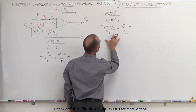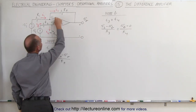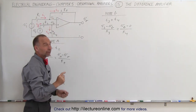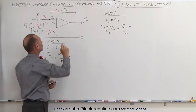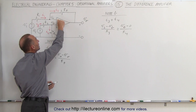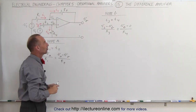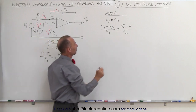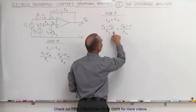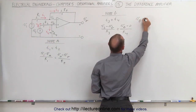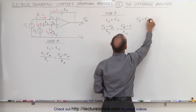Let's solve for VB in this equation. Notice that VA and VB must be equal to one another, because we know that the voltage difference between them is zero since there's no current flowing there in an ideal operational amplifier. So let's solve this for VB, realizing that VB must equal VA.